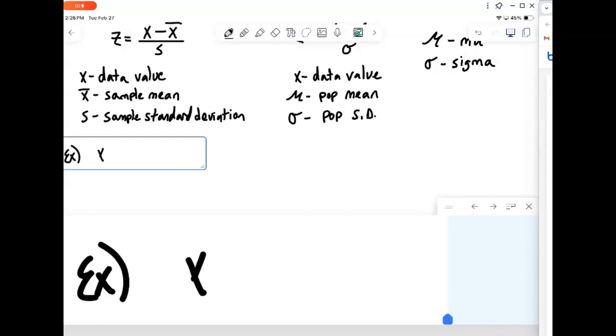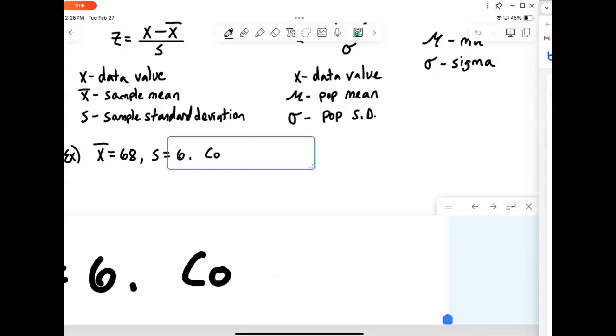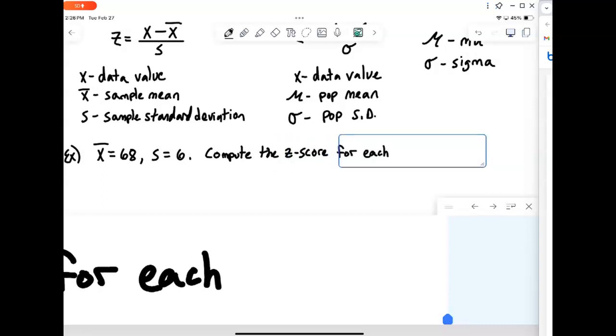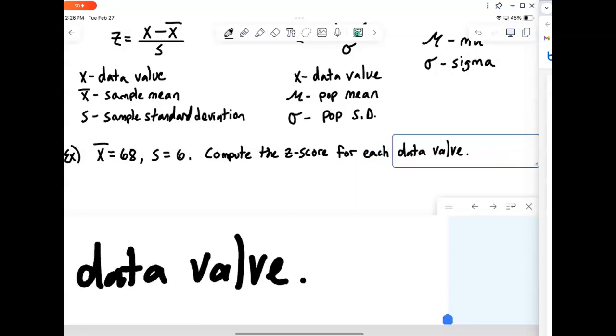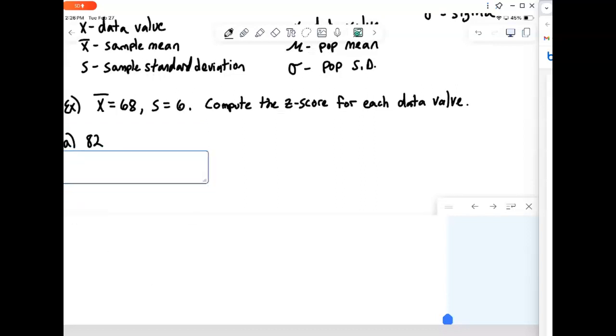So let's consider a set of data where our mean is 68 and our standard deviation is 6. Let's say we want to compute the z-score for each data value. So let's consider our first one here, a data value of 82. So what we would do is take our z-score, we would take our data value 82, subtract off our mean, 68.